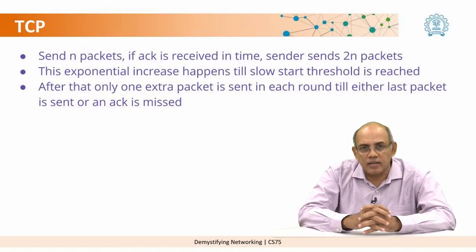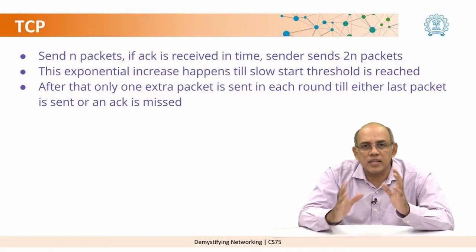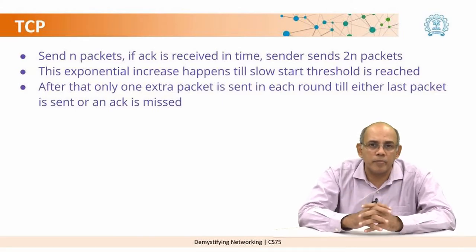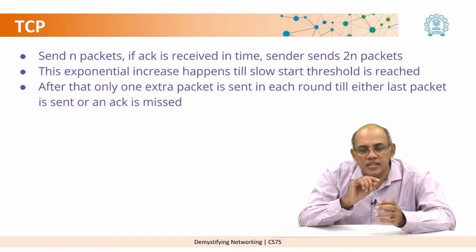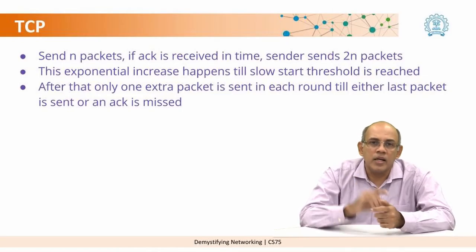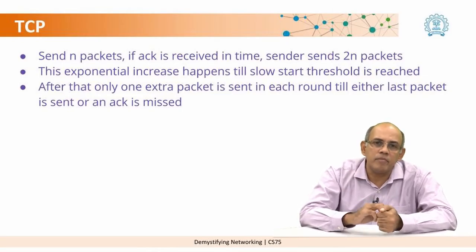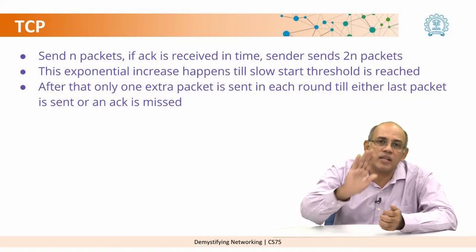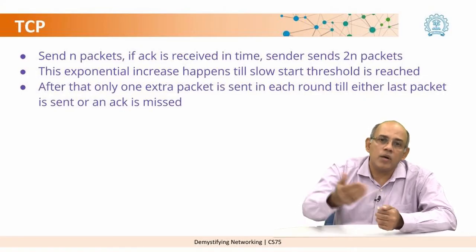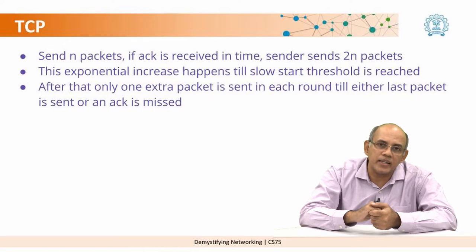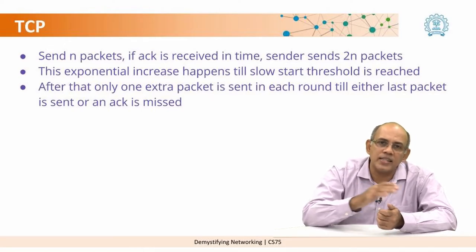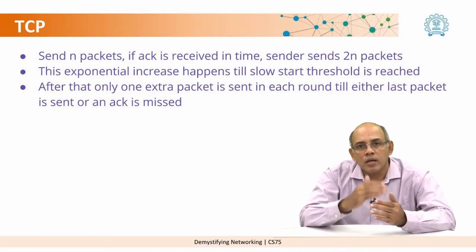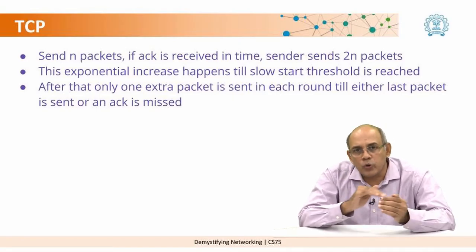Both these ideas are correct. Actually, what TCP does is a mix of both of them. There are many variants of TCP. In one variant, it starts with one packet. If the acknowledgement for that packet is received back in time, the next round it sends twice the number of packets. Once again, if the acknowledgement is received in time, the next round it sends twice the number again — so in that sense it grows exponentially up to a certain point.